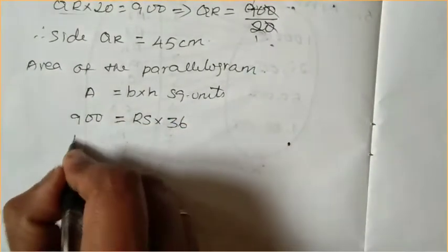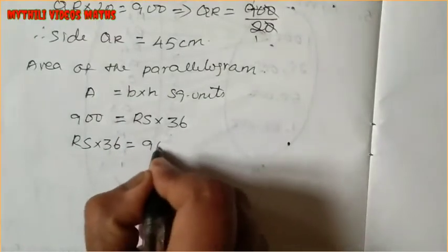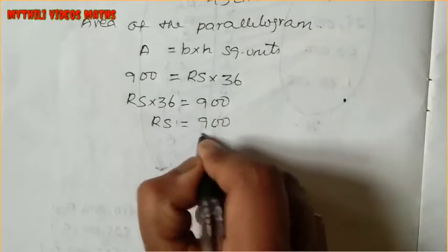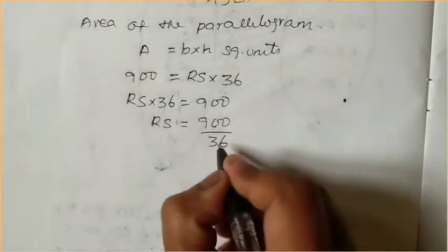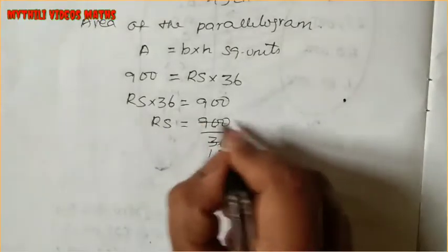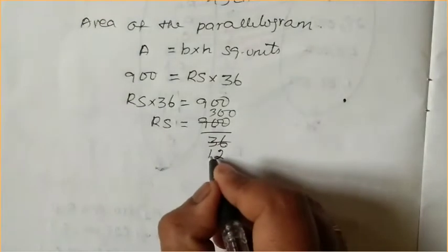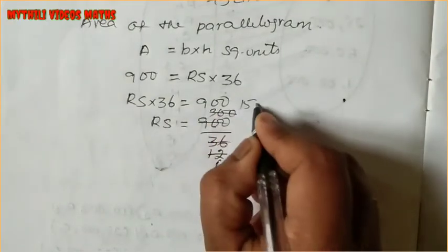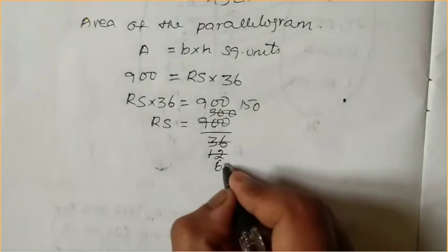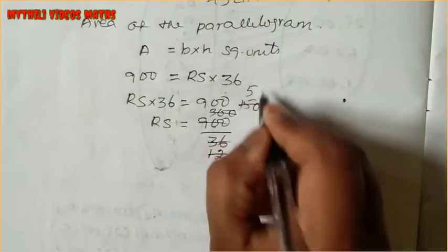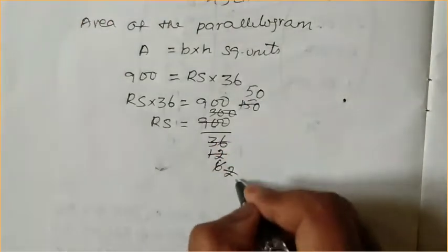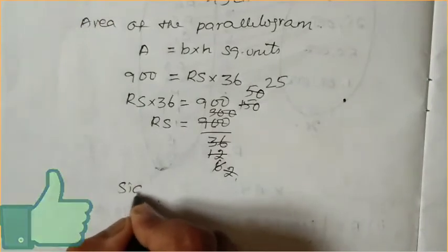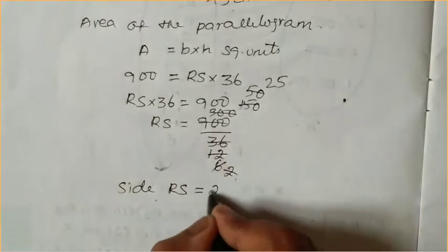So RS into 36 equals 900. Therefore RS equals 900 divided by 36. Cancelling: 3 goes into 9 three times, and simplifying step by step through the division, we get RS equal to 25 centimeters.